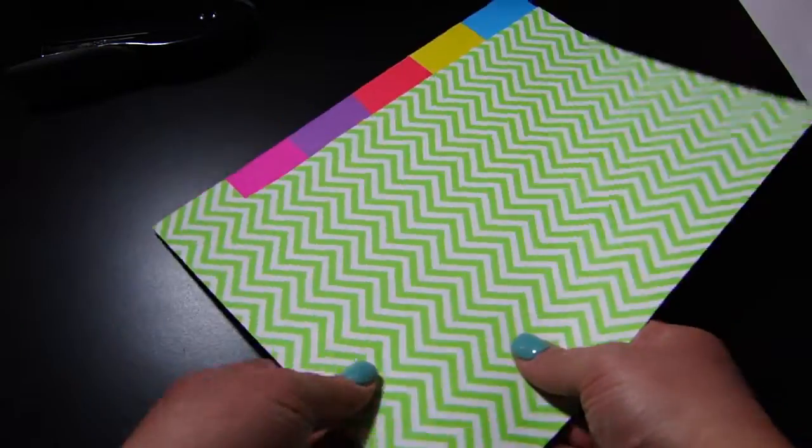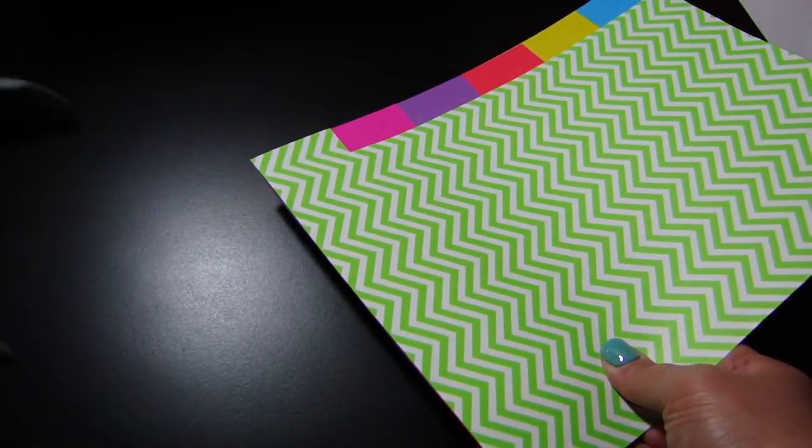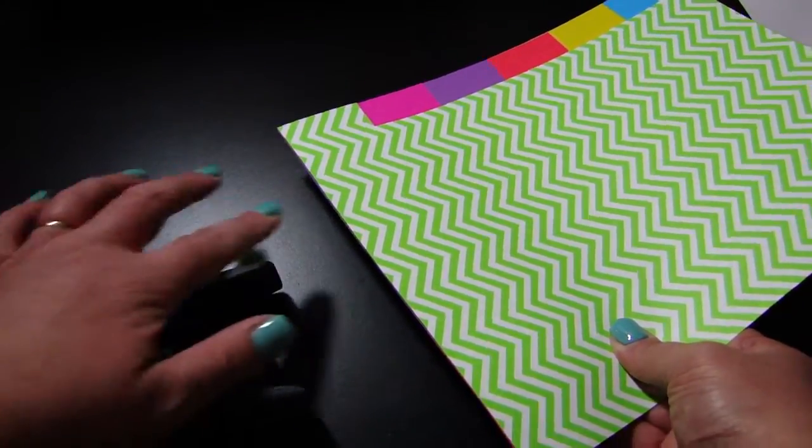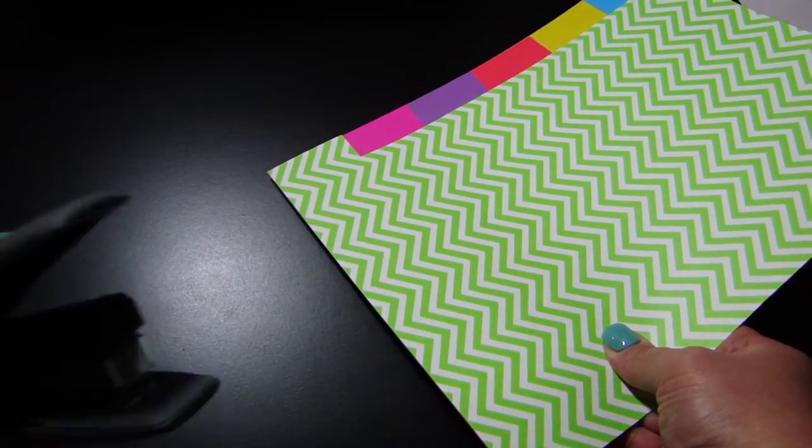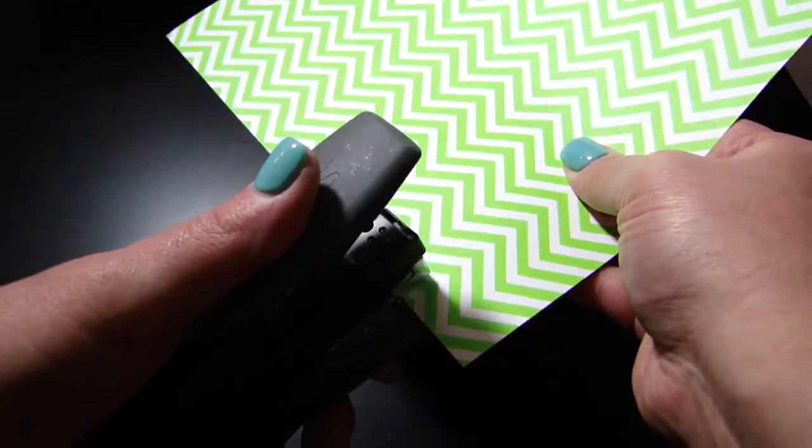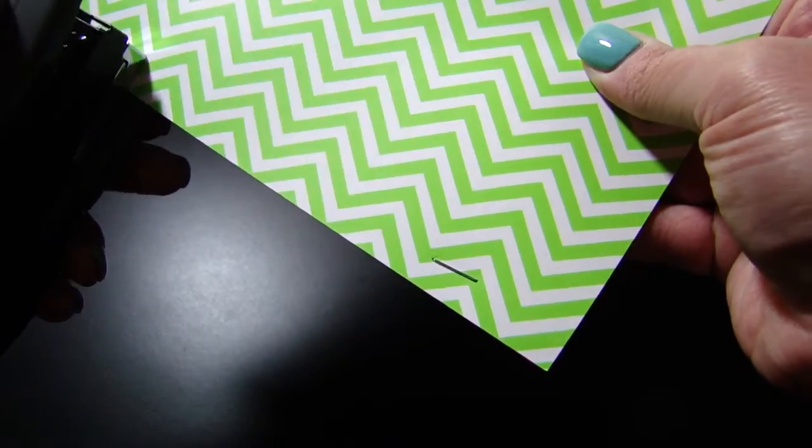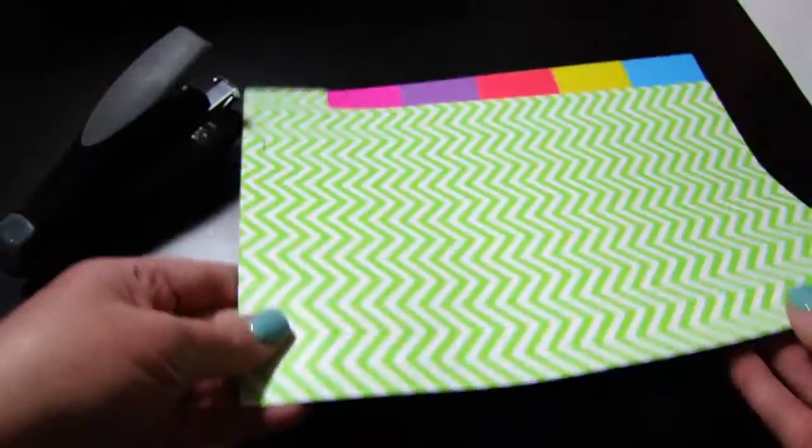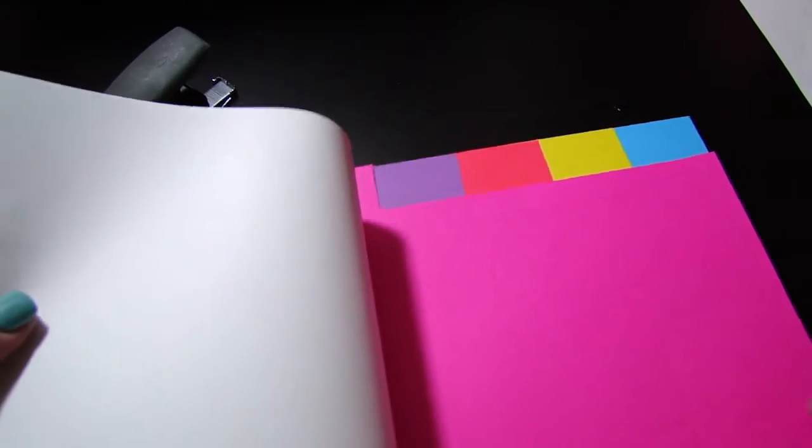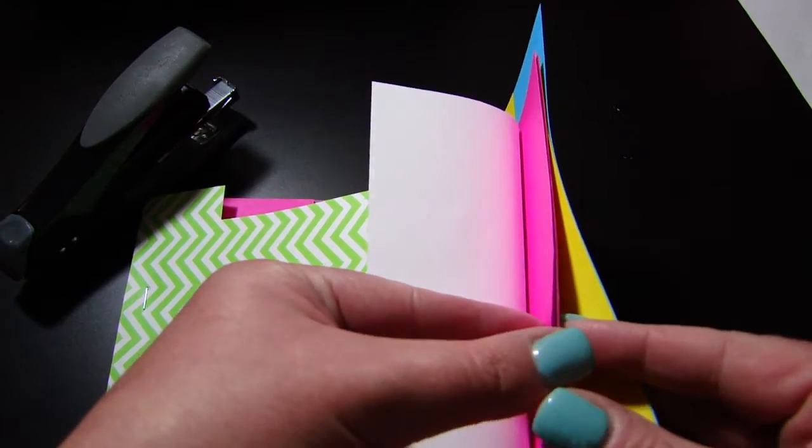So then all we have to do is staple here and a staple here so that it opens. Make sure I've got this on the right spot. So we'll do one here and one here. And now we have our tabbed book ready to go for the periodic table.